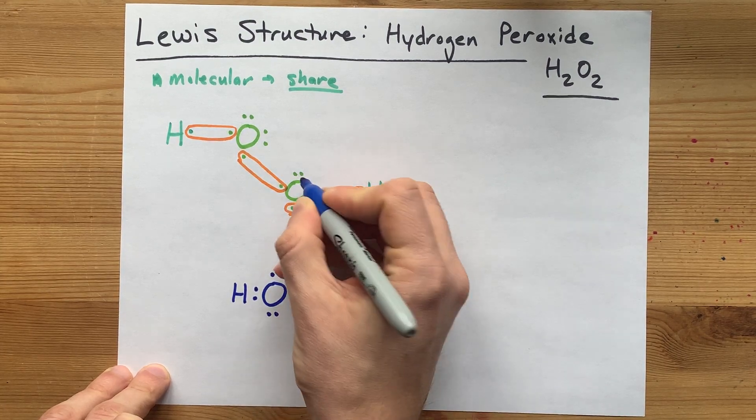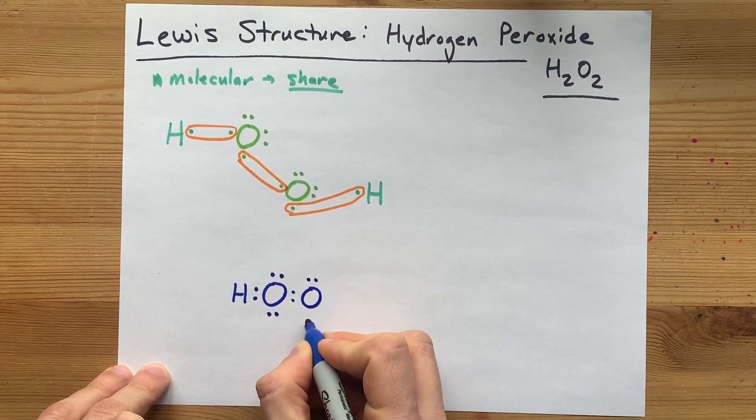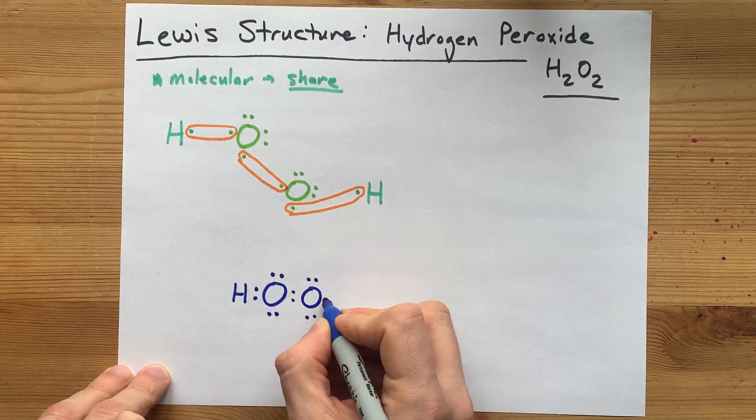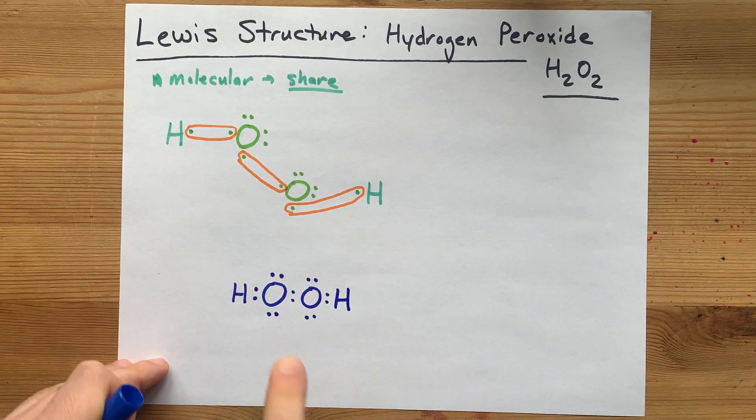Okay. Now, that oxygen has four electrons on its own, and two electrons shared with the hydrogen. There we go.